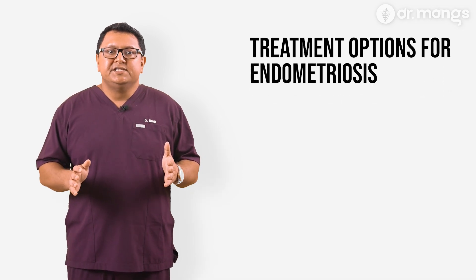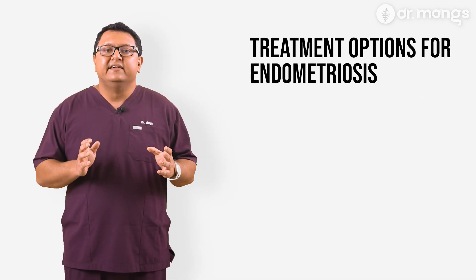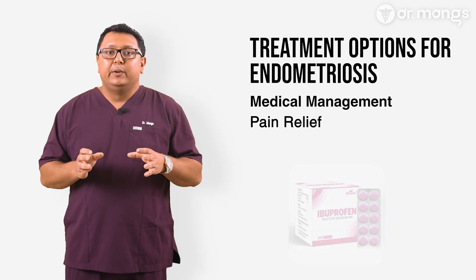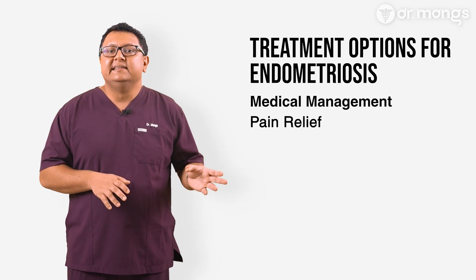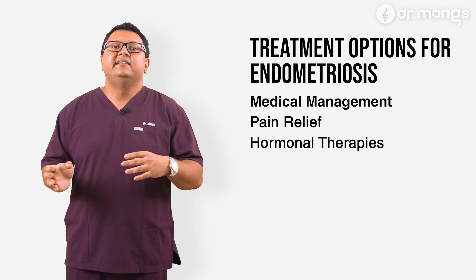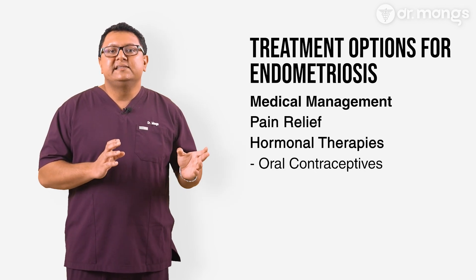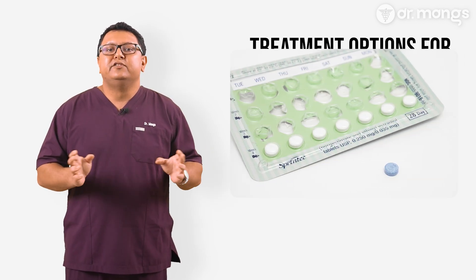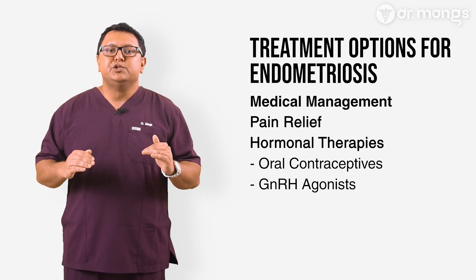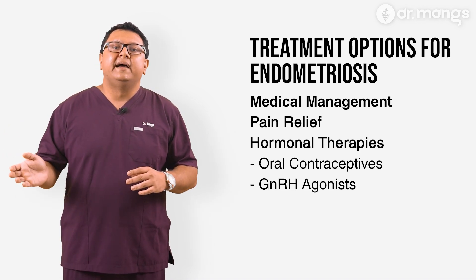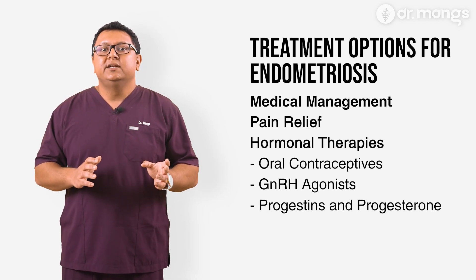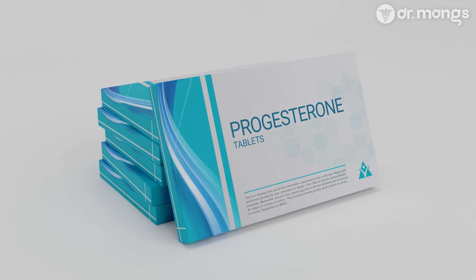Several treatment options are available to manage the symptoms and improve quality of life. Non-steroidal anti-inflammatory drugs like ibuprofen can help manage pain; however, they do not address the underlying disease. Hormonal therapies aim to reduce or eliminate menstruation, thereby alleviating some pain-related symptoms. Birth control pills can be used to regulate or stop menstrual periods. GnRH agonists induce a temporary menopausal state, lowering oestrogen levels and suppressing symptoms, though they have no impact on progression or regression of disease. Progestins or progesterone are hormones that can help suppress endometriosis-related pain.